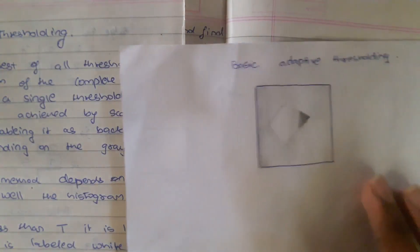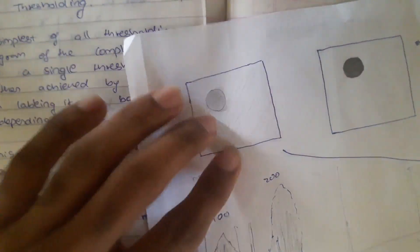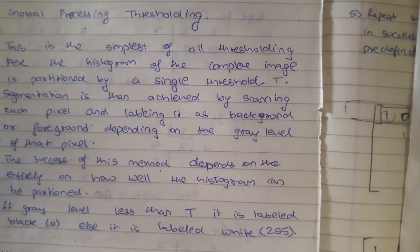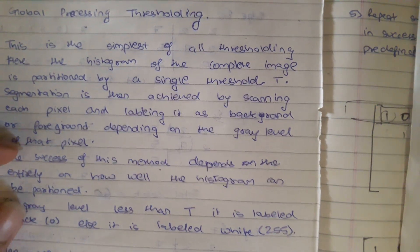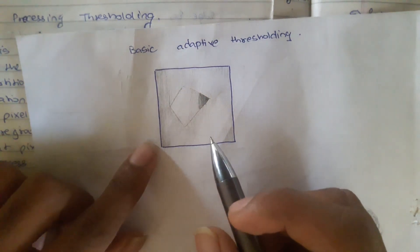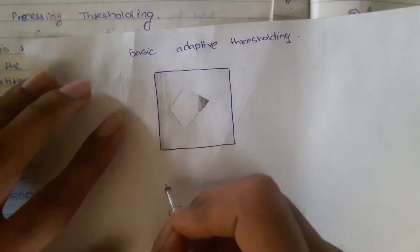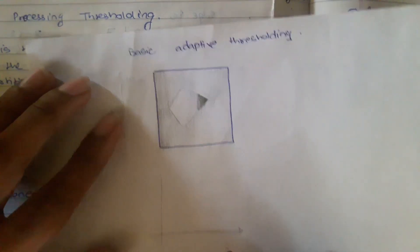We have seen in global threshold processing that the success of global thresholding depends entirely on how well the histogram can be partitioned. Now if you consider an image like this, the histogram will be very different.